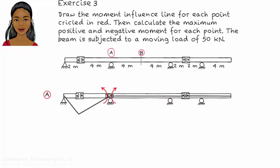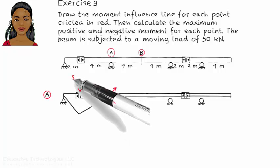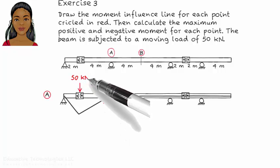Therefore, no positive moment develops at A. The maximum negative moment at A occurs when the moving load is at the leftmost hinge on the beam.